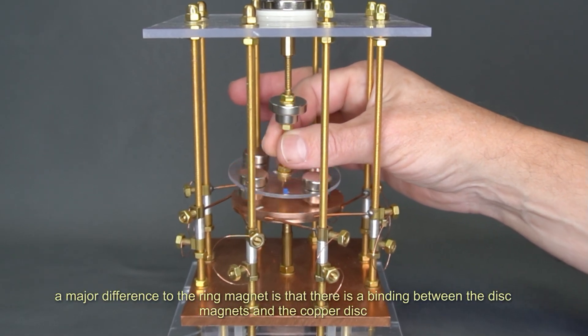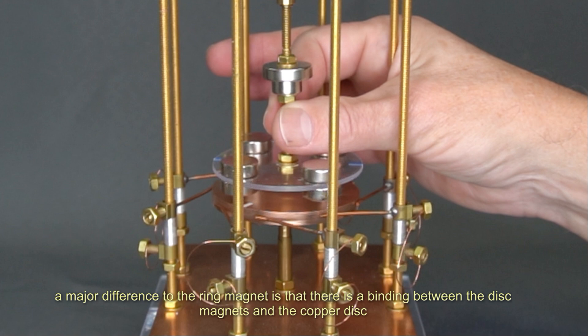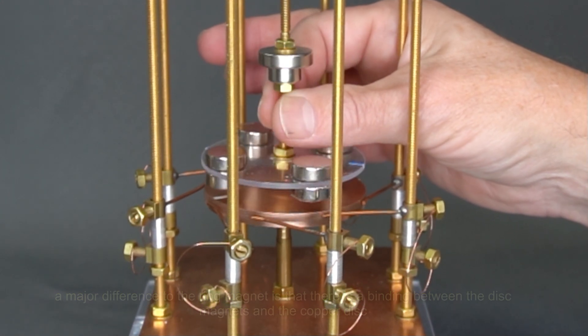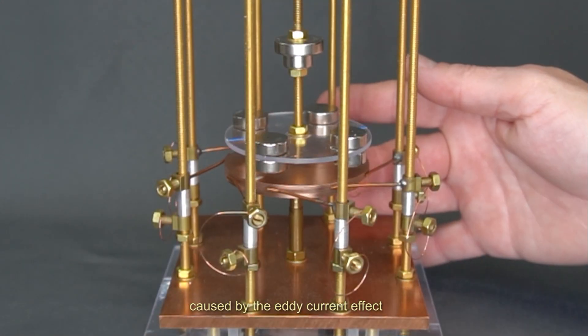A major difference to the ring magnet is that there is a binding between the disc magnets and the copper disc, caused by the eddy current effect.